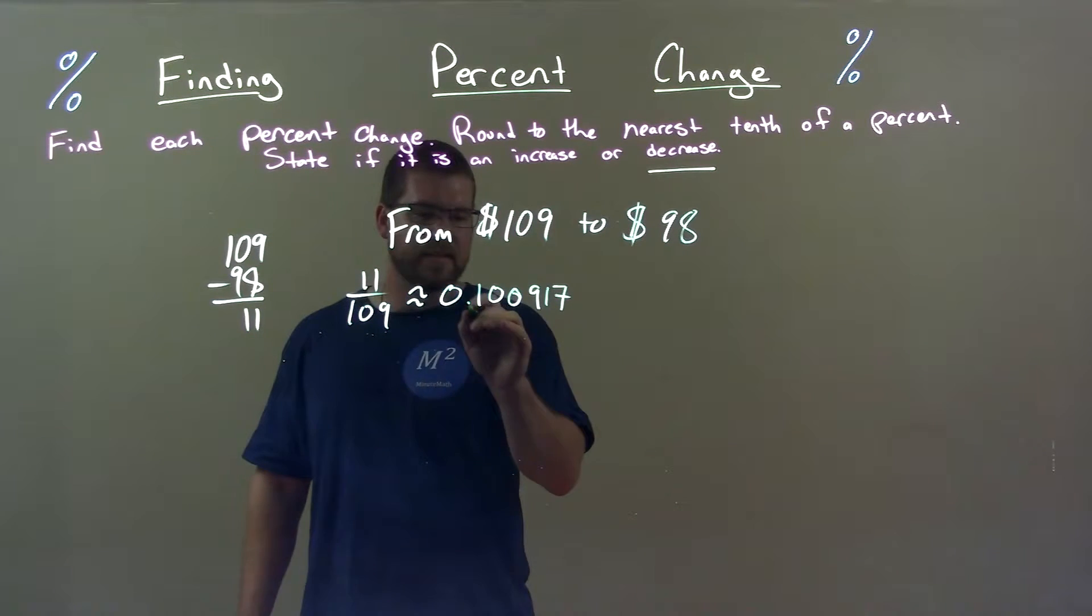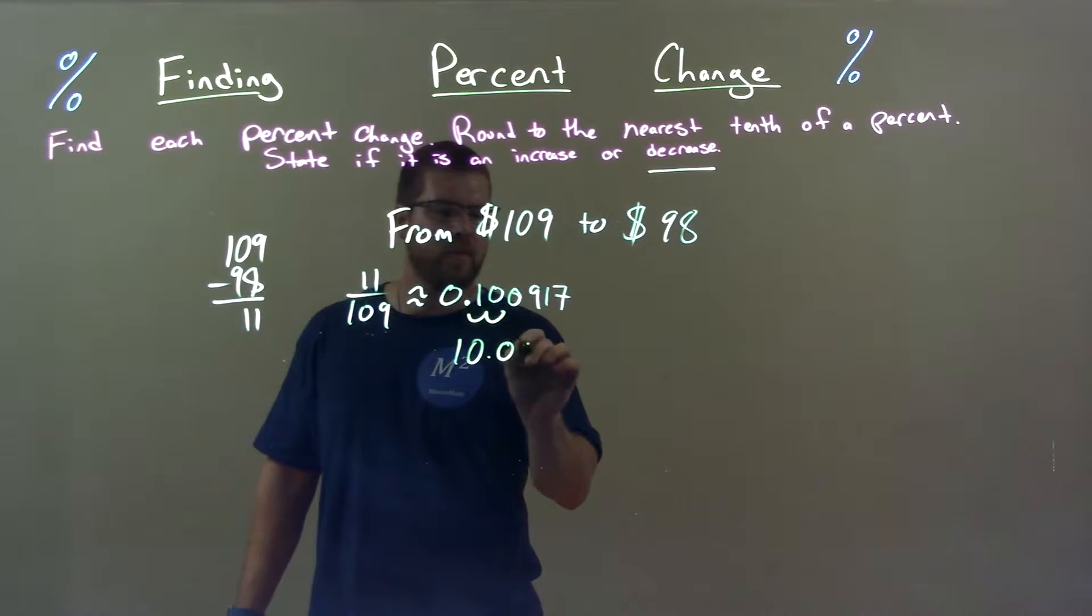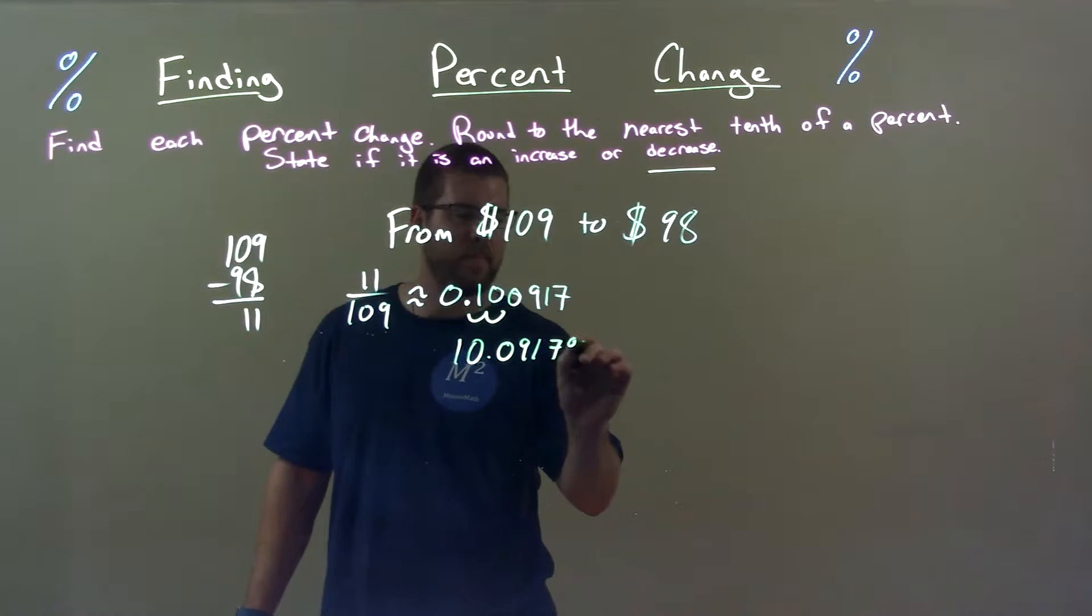Write that as a percent. Move the decimal point two spots to the right, got 10.0917 percent.